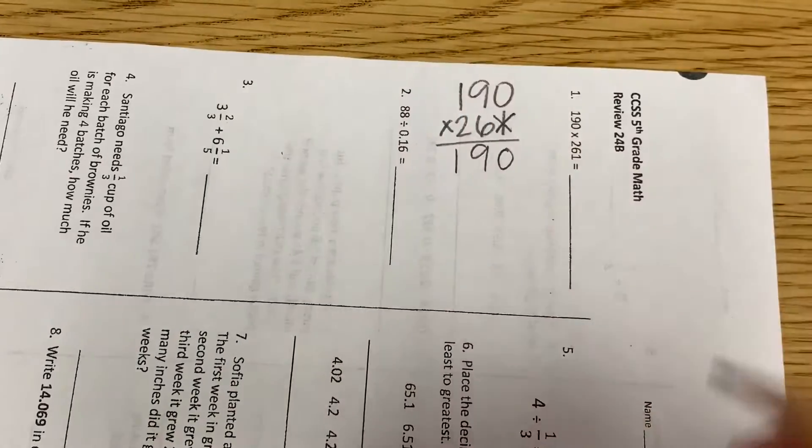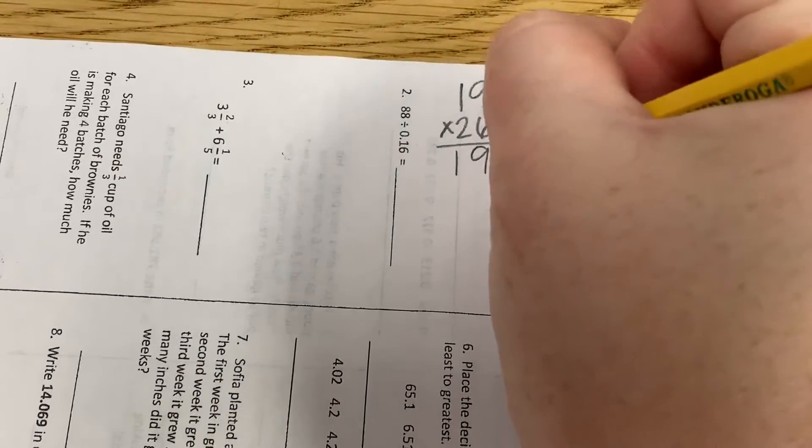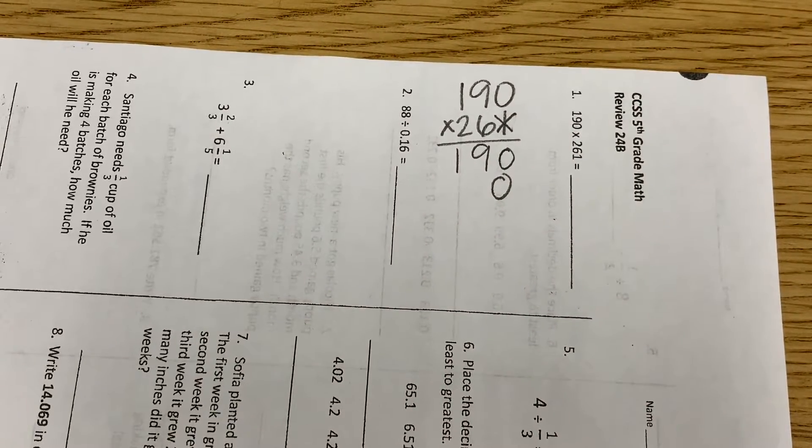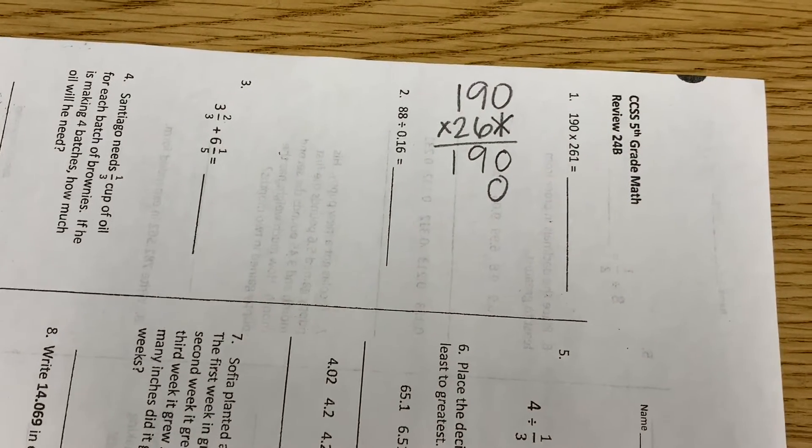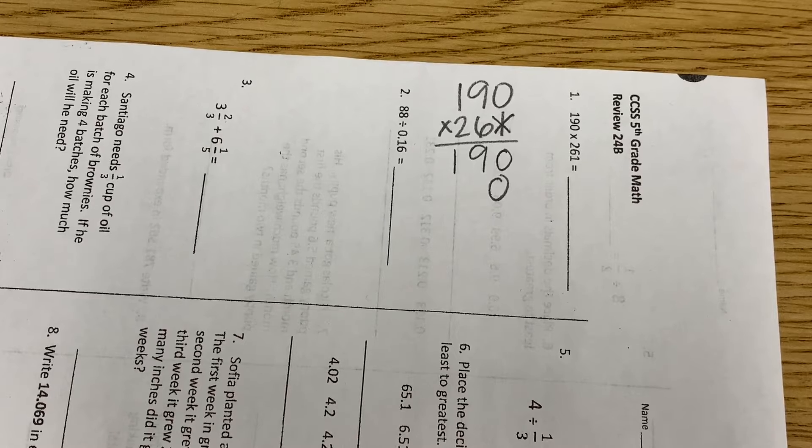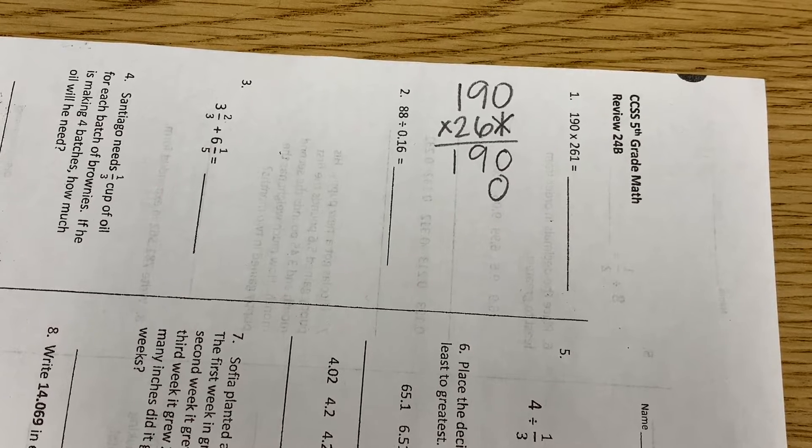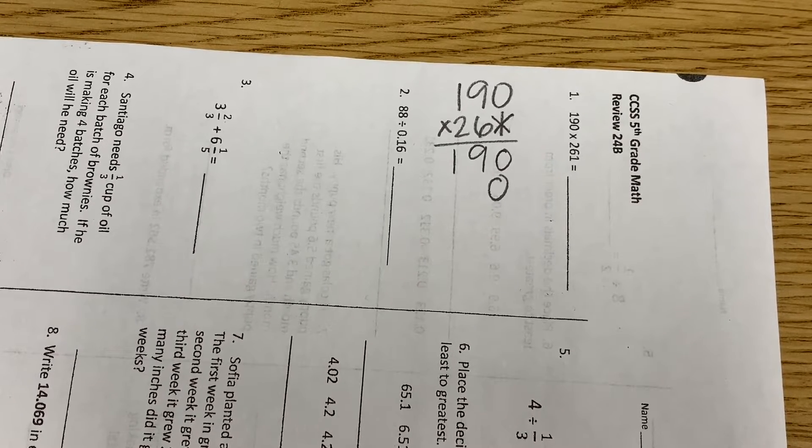Mark out my one and bring down a zero. Obviously I didn't carry anything, so there's nothing to erase. Okay, so now what am I multiplying by? Six.